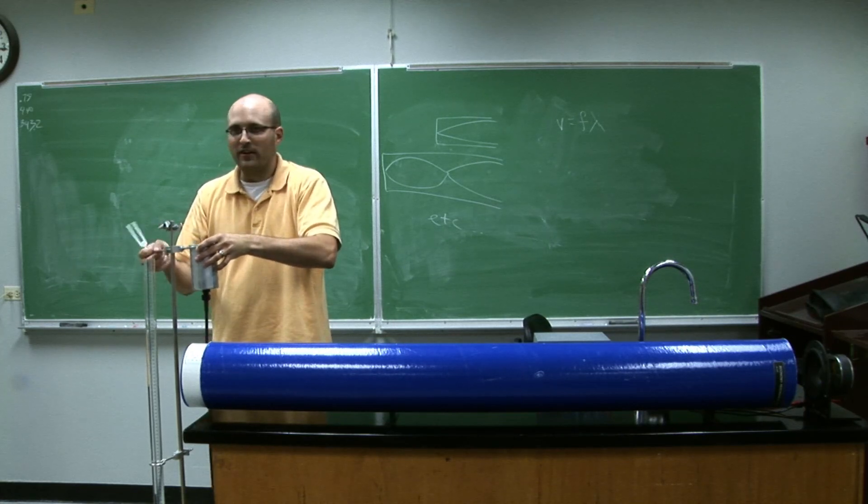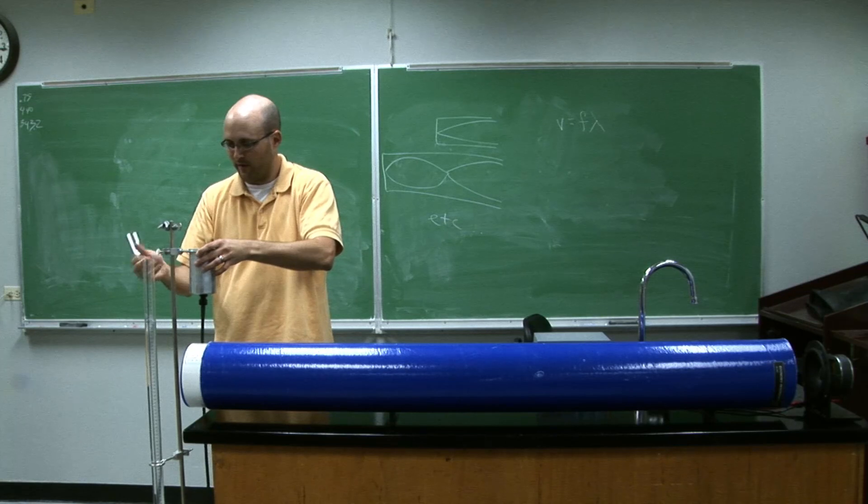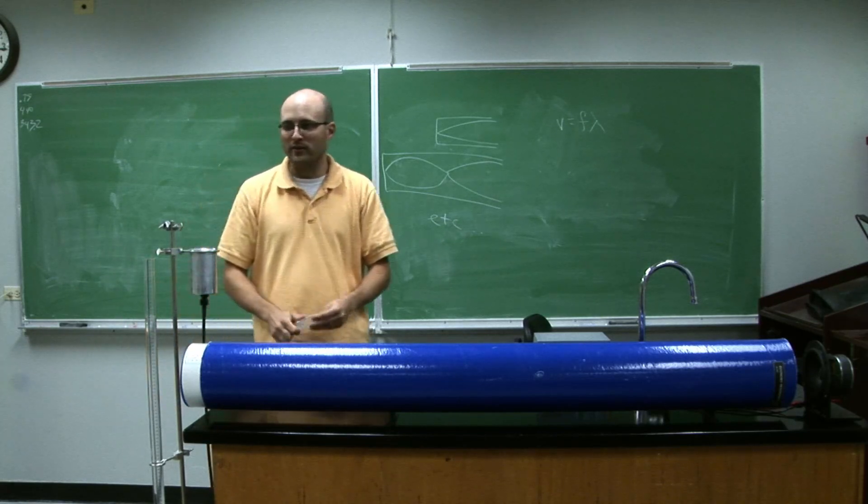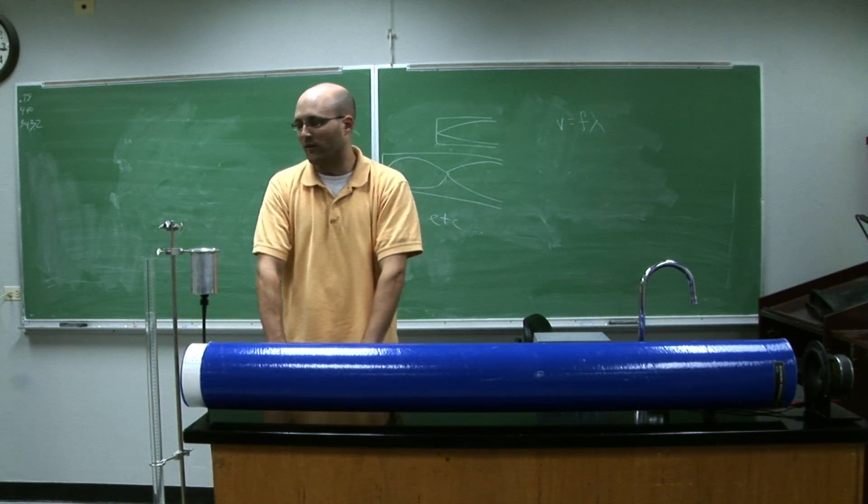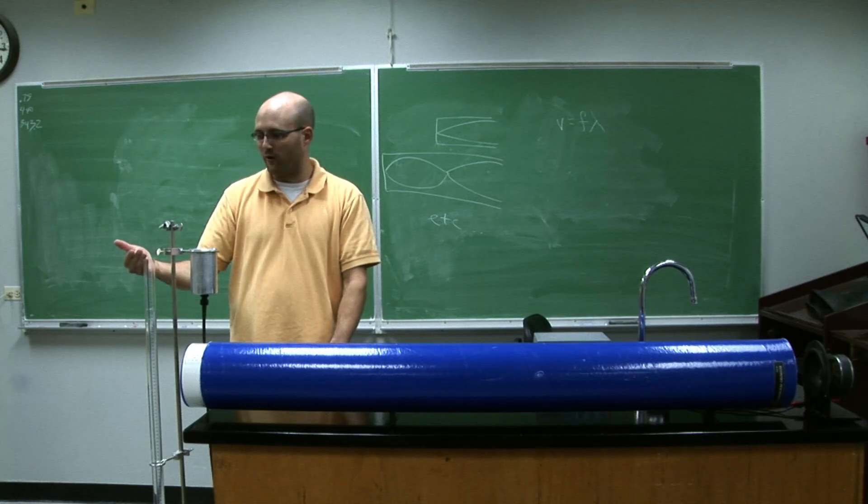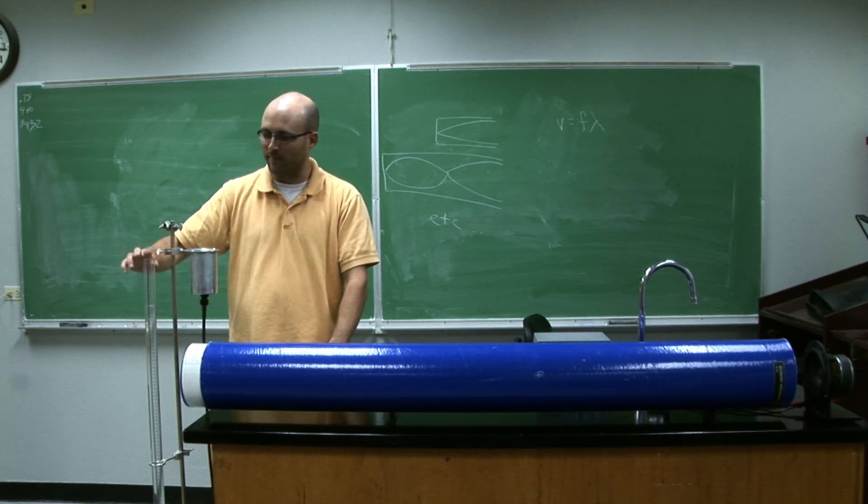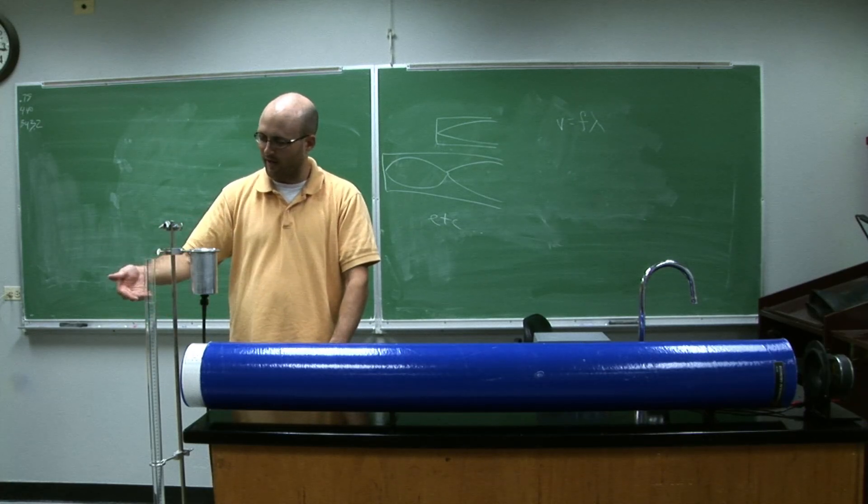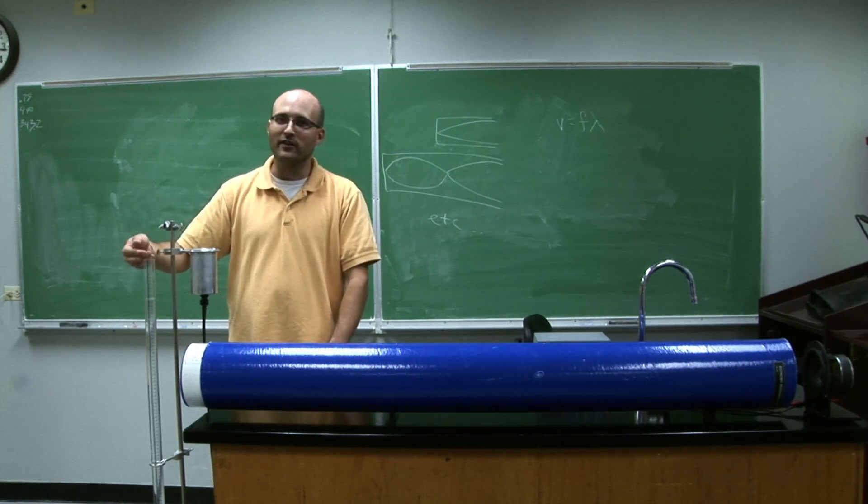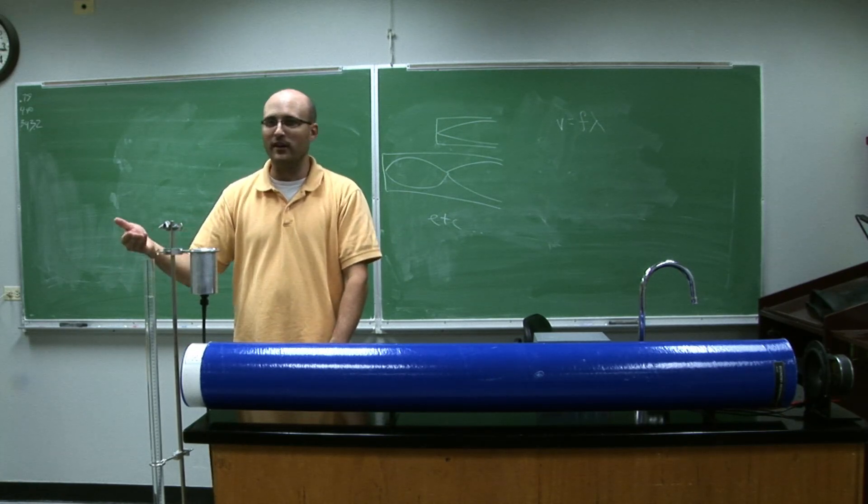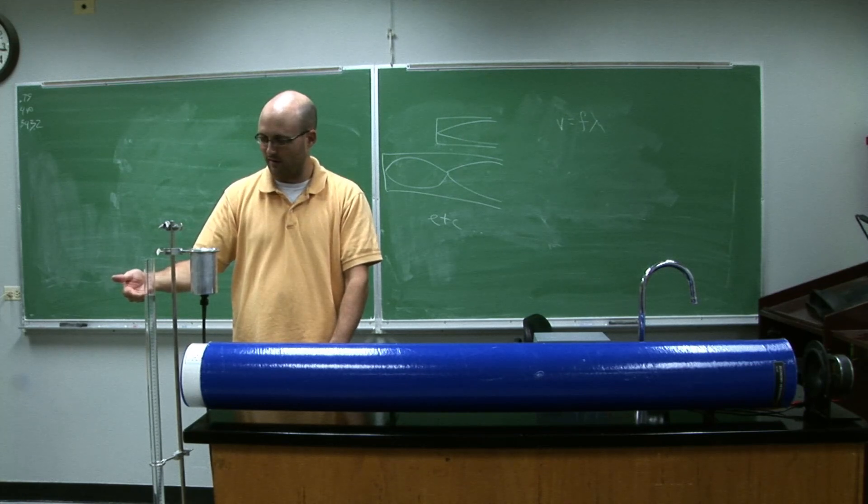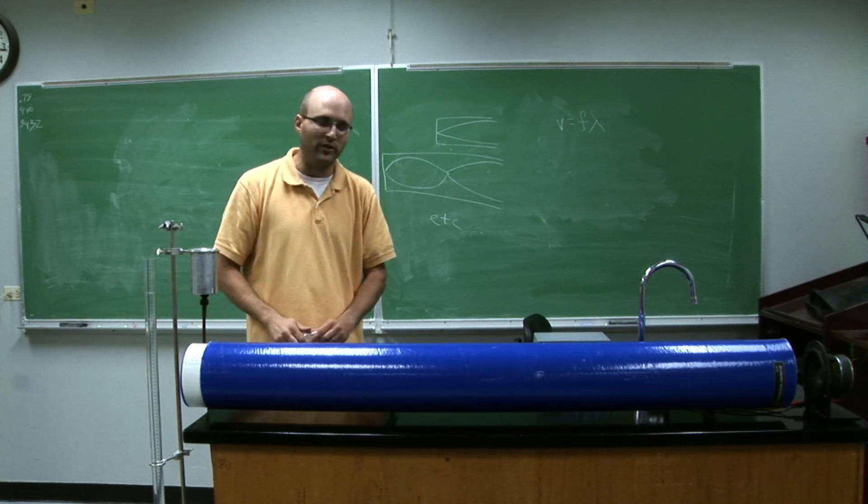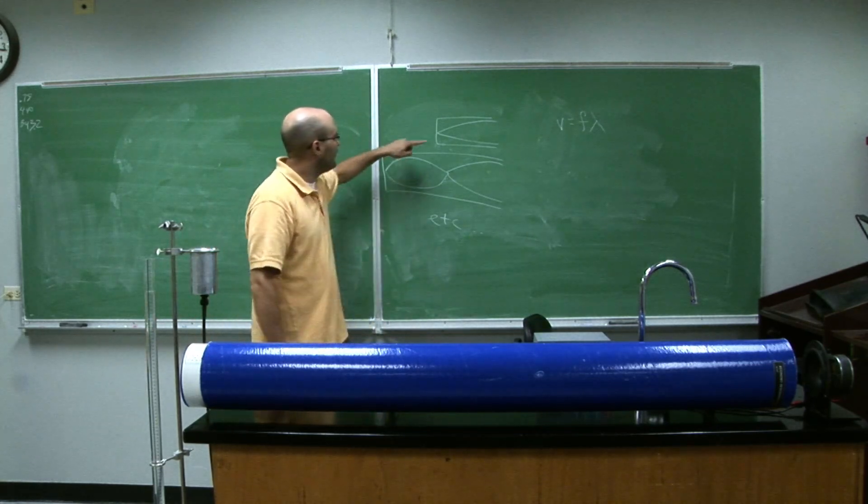So we've seen here, and you will measure in the lab, several locations where it does this. What's happening here is I'm trying to get a good standing wave going in this resonance tube. For a tube that has one end closed and one end open, ideally you would like the open end to be an anti-node and the closed end to be a node. It's like these pictures here.